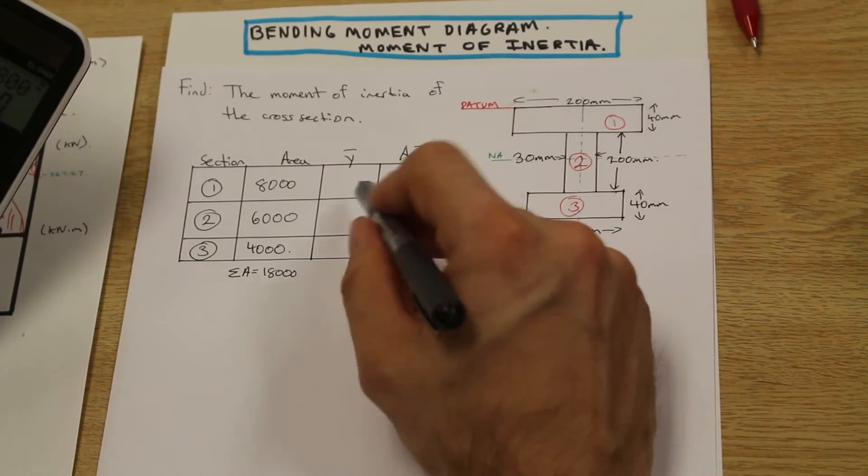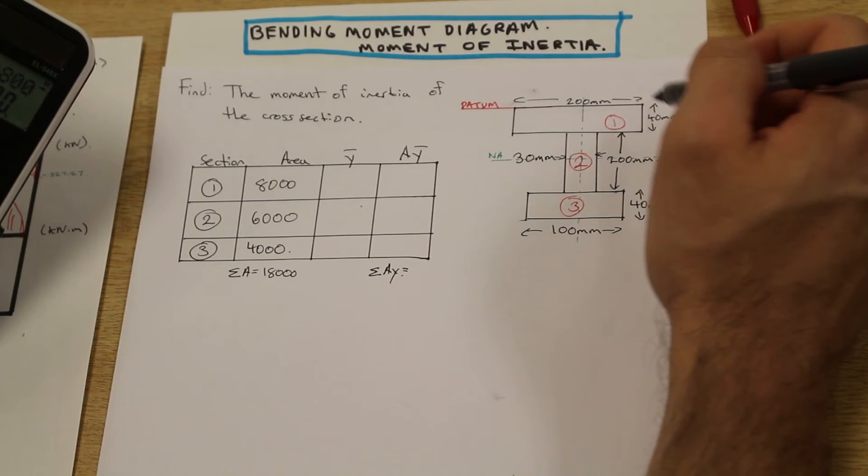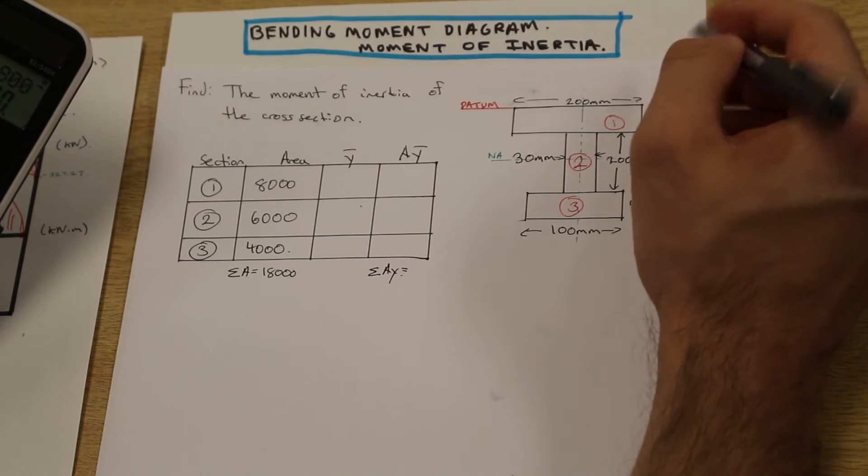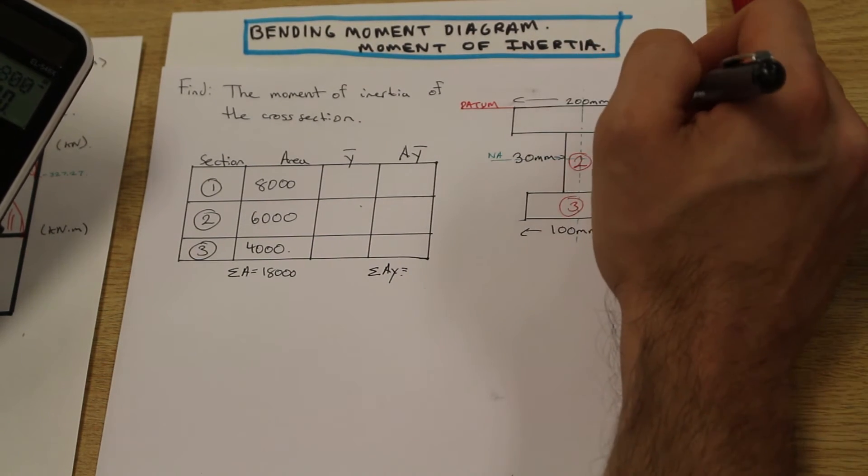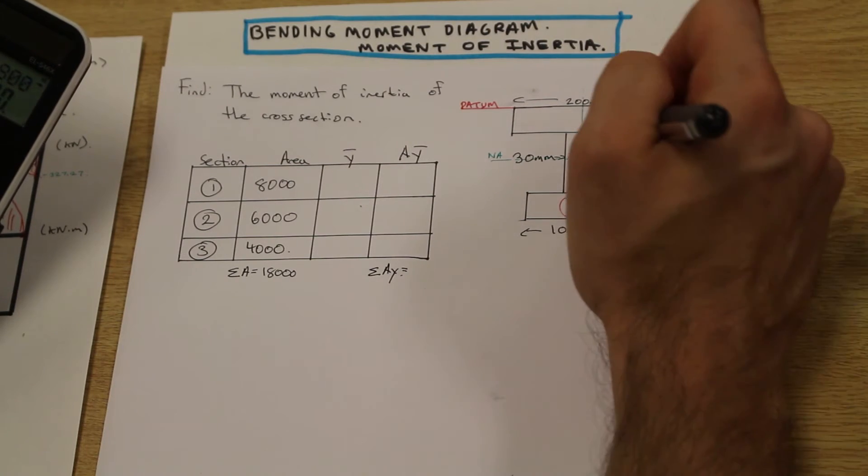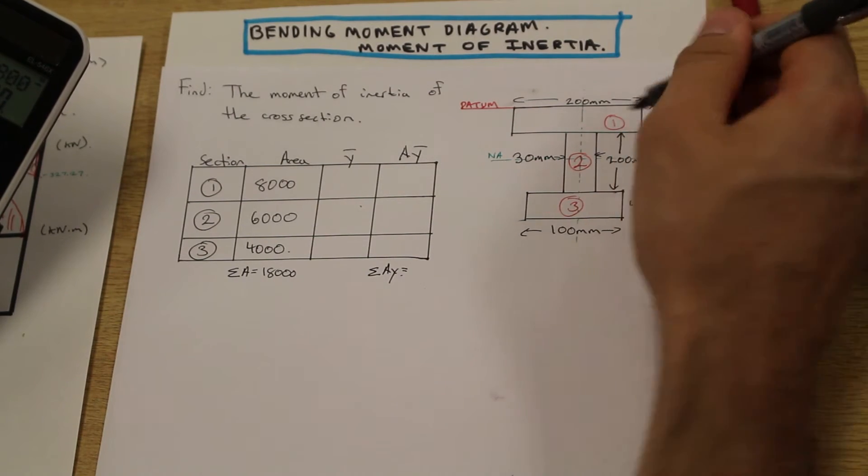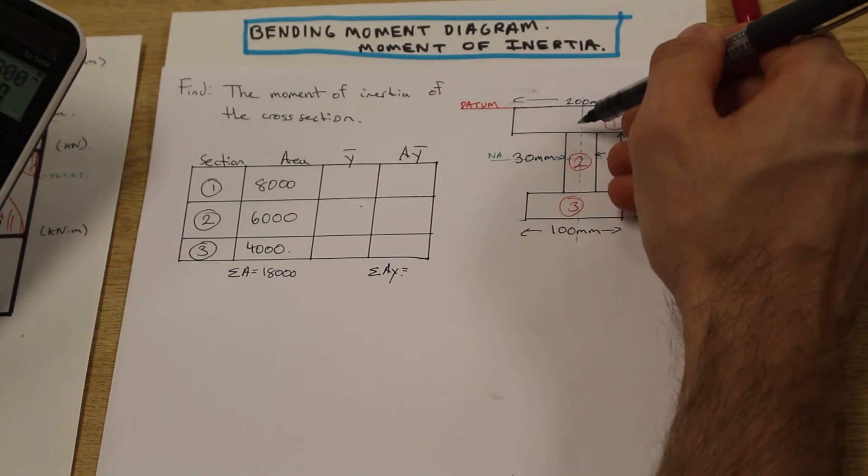We'll go into that after. Now what's Y bar? Y bar, if you remember from previous videos, is the distance from the datum to the centroid of the shape in question.